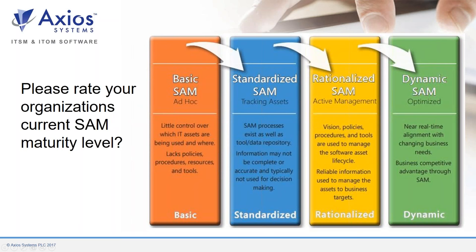We'd like to rate your organization's maturity level based on these pillars: Basic, which is around ad hoc with little control over IT assets being used everywhere. Moving up to Standardized, which is a SAM process that exists as well as tools and a data repository. Then Rationalized SAM, where you have vision, policies, procedures, and tools used to manage the software asset lifecycle. Or right at the top, Dynamic SAM, where there's real-time alignment between changing business needs.